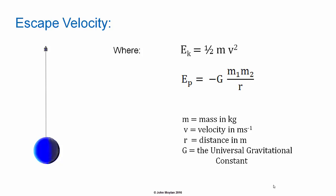Recall that kinetic energy E subscript K equals one half mv squared, where m is mass in kilograms and v is velocity in meters per second. And E subscript P, gravitational potential energy, is equal to minus capital G M1 M2 over R, where capital G is the universal gravitational constant, M1 and M2 are the masses in kilograms, and R is the distance between them in meters.